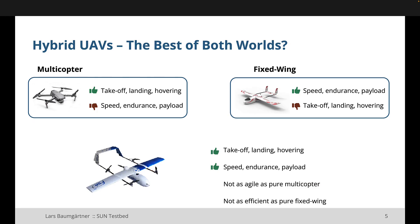Most people, when we say UAV, think of quadcopters. They're very common already — many first responders already have them. They're easy to deploy, can take off and land vertically, and can hover in place. But they're not very fast, cannot stay in the air for very long, and are quite limited in carrying capacity for payload.